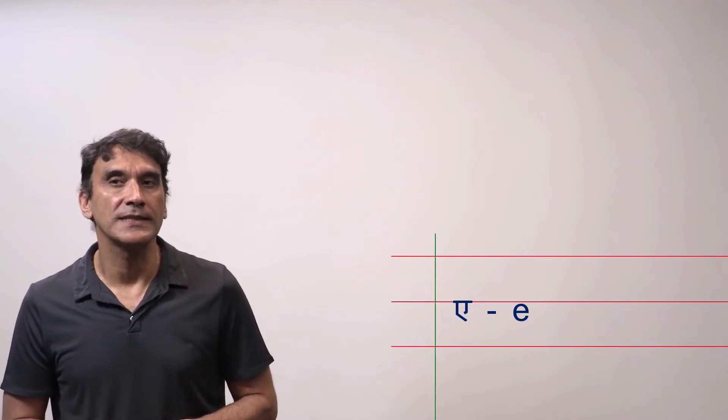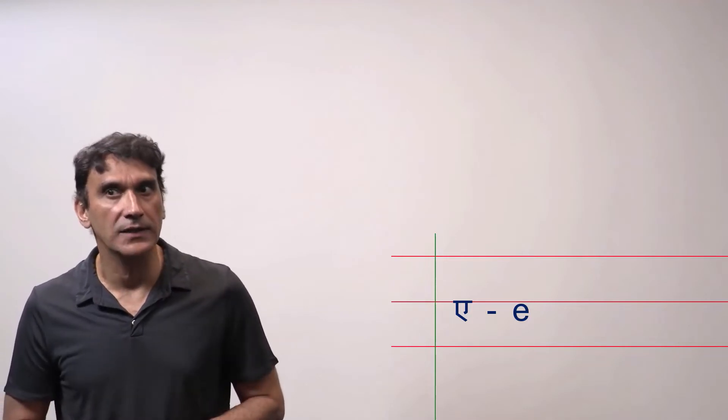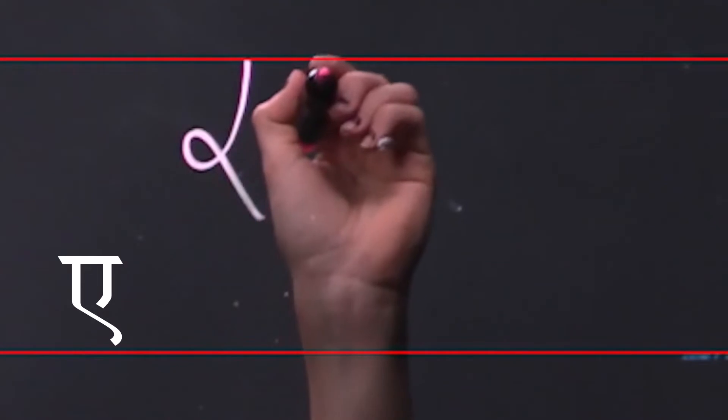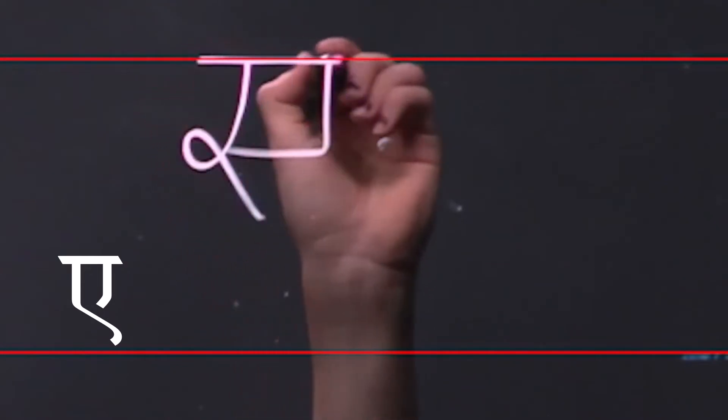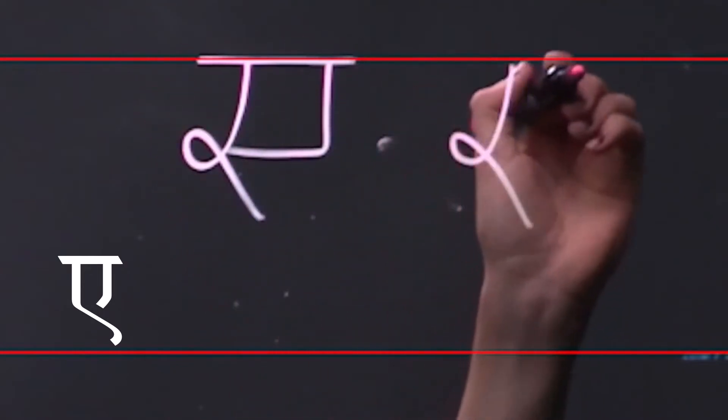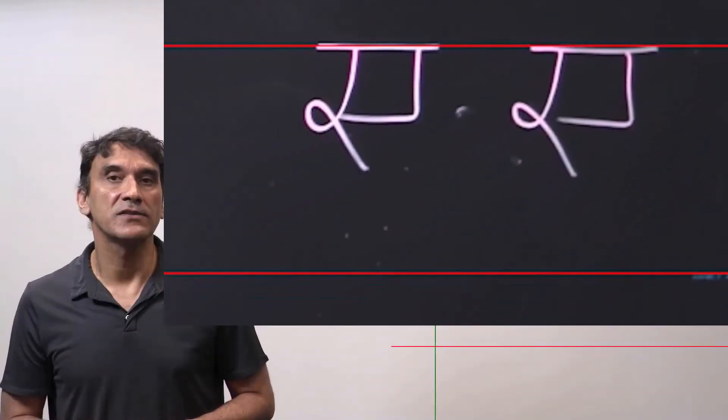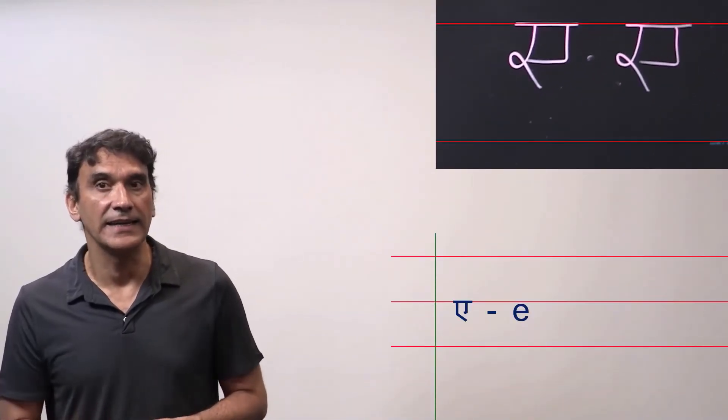Usually in the print form you see that the second vertical line is not connected but in the handwritten form it is usually connected to the first vertical line. As I said, the sound is e as in same. The Roman transliteration is the letter E in English.